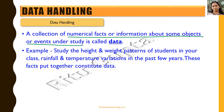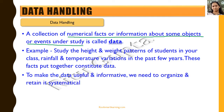We collect the height and weight of each of 40 students, and that numerical data is called the data of the class regarding height and weight. Similarly, rainfall and temperature variations over the past few months or years is also data. These facts put together constitute the data, and to make it useful and informative we need to organize and retain it systematically.